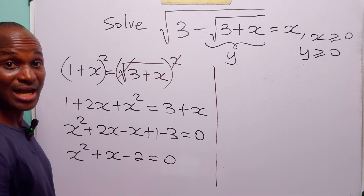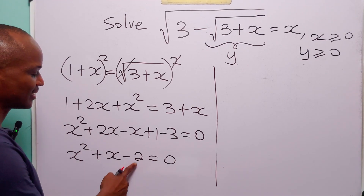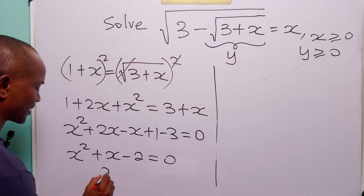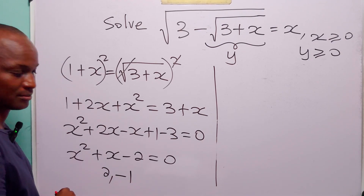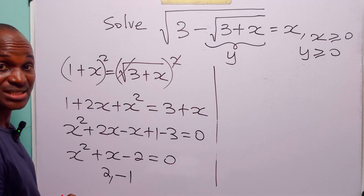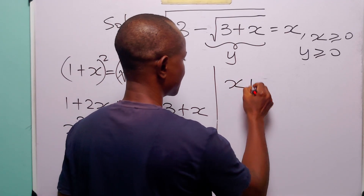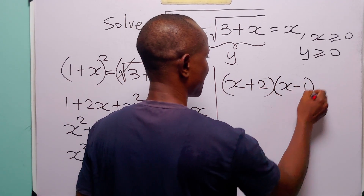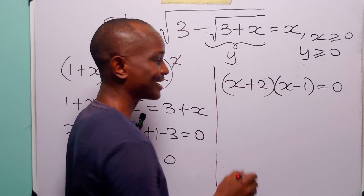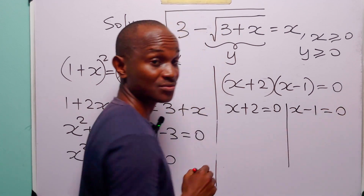Now we have the quadratic equation x squared plus x minus 2 equals 0, which we can solve by factorization. Since the coefficient of x squared is 1, all we have to do is find the factors of minus 2 that add up to plus 1. Those are 2 and minus 1, because 2 times minus 1 gives us minus 2, and 2 minus 1 gives us plus 1. So we can factorize the left hand side as x plus 2 multiplied by x minus 1, and this is equal to 0. From this, either x plus 2 is equal to 0 or x minus 1 is equal to 0.